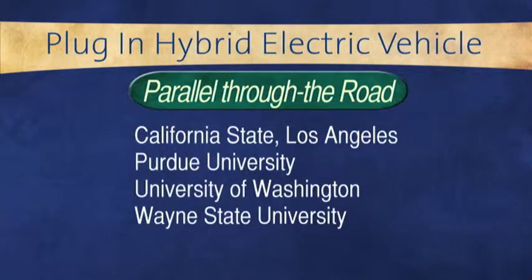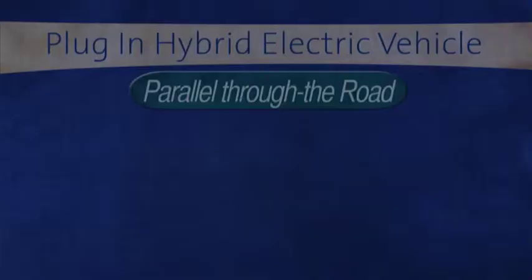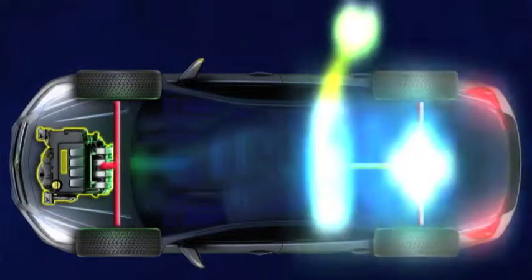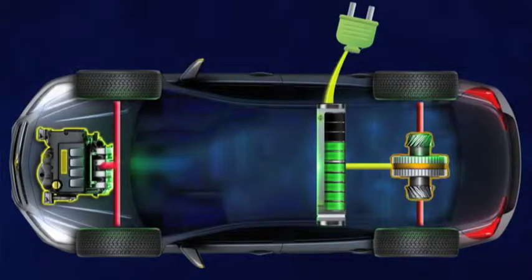Our third architecture is a parallel through the road hybrid. This hybrid has an engine on one axle and an electric machine on the other axle. Combining these two together in this format allows the vehicle to perform hybrid operations such as electric only propulsion or blended hybrid operation.